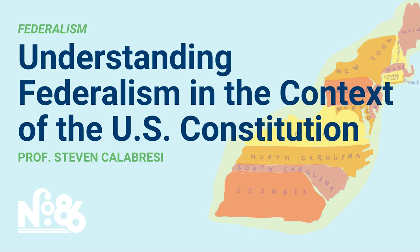Because we have 50 states, which is a very large number for a federation, the states have lost political clout in Congress and with the president. Many federations are smaller — Germany has a very vibrant system of federalism with 16 states, which it calls Länder. Canada has significant aspects of federalism with 10 provinces, and one of them, Quebec, is threatening to secede.